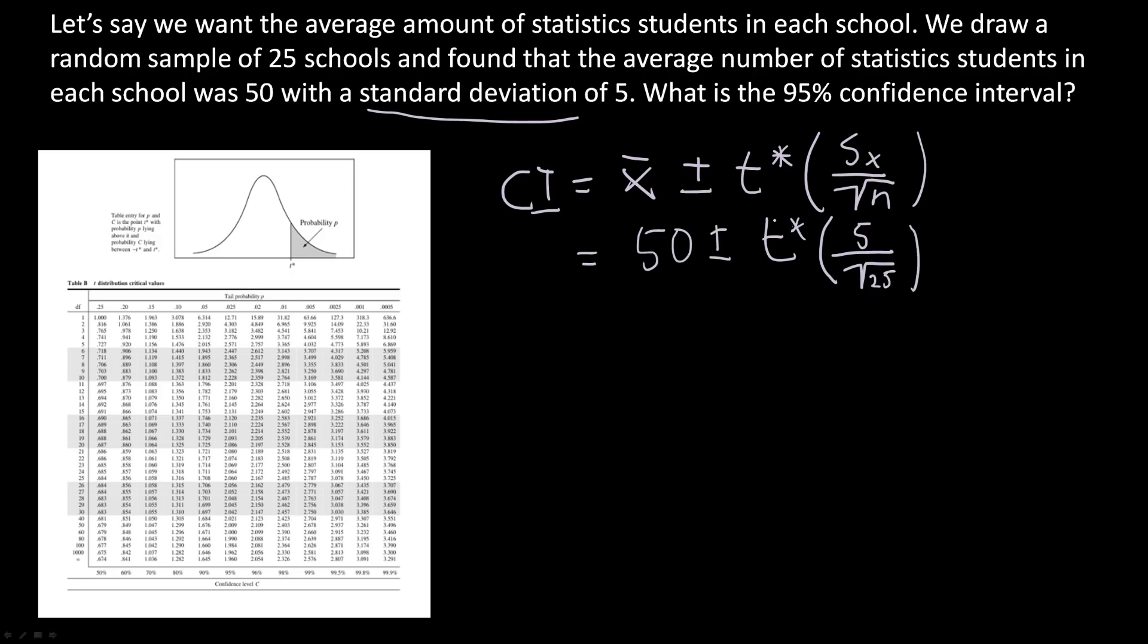So here we need to fill in the T star value. So for that, we need degrees of freedom. And if you remember, degrees of freedom is equal to the sample size subtracted by 1. So it's going to be 25 minus 1, or 24.